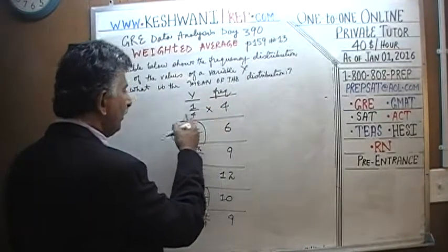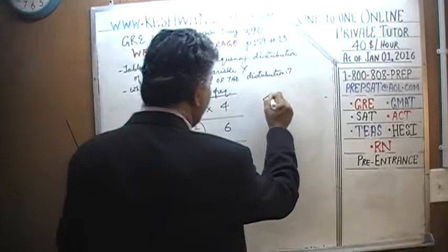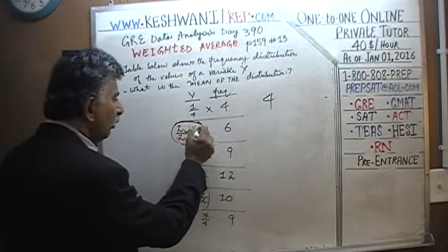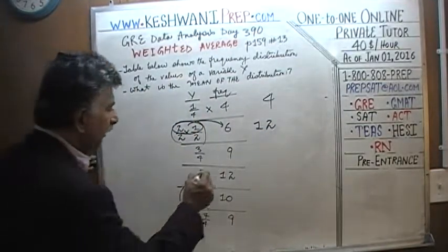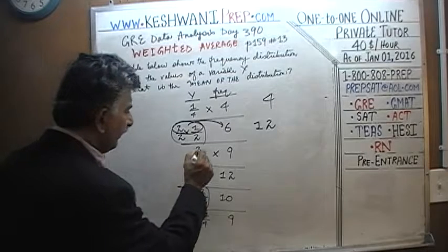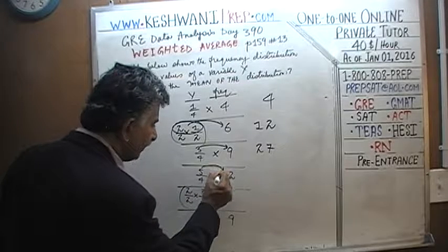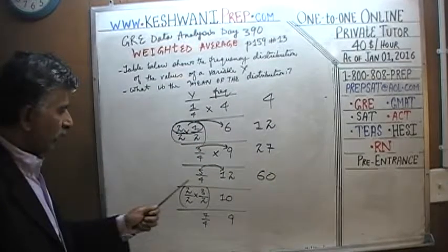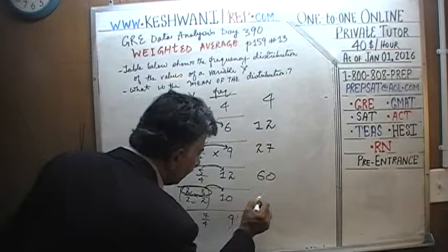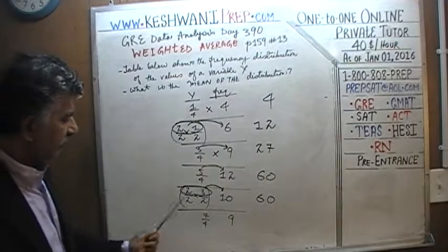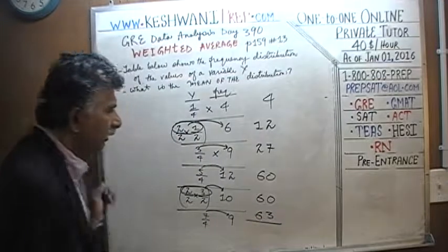Four people gave one quarter each — that's four quarters. Six people gave two quarters each — that's twelve quarters. Nine people gave three quarters each — nine times three is twenty-seven quarters. Twelve people gave five quarters each — that's sixty quarters. Ten people gave six quarters each — six times ten is again sixty quarters. Nine people gave seven quarters each — seven times nine is sixty-three quarters.